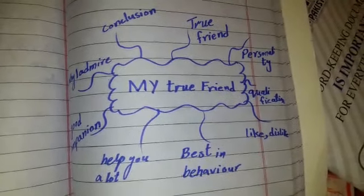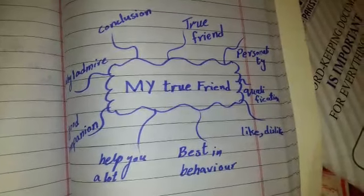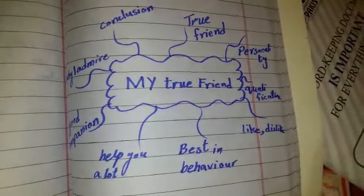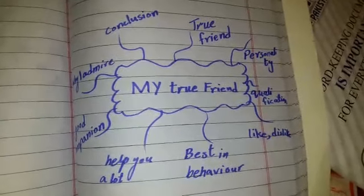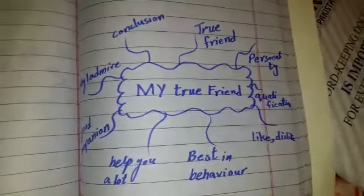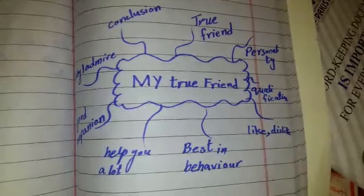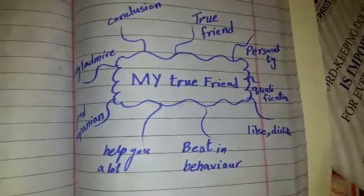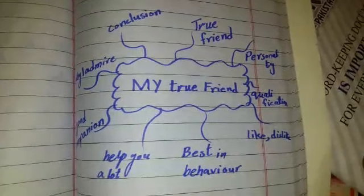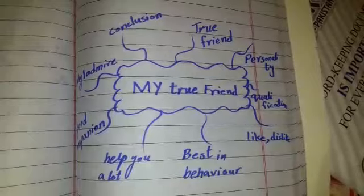First you have to make the mind map in your notebook — exactly like this. You can change the wording — it's up to you. Your writing should be very neat, and you have to fill your index first. On the first page, make the mind map of 'My True Friend,' and on the next page compose it — that is, create the creative work from the mind map. Write the mind map and create an essay on your notebooks. Your writing should be very neat, with proper date and day. Thank you. Have a nice day.